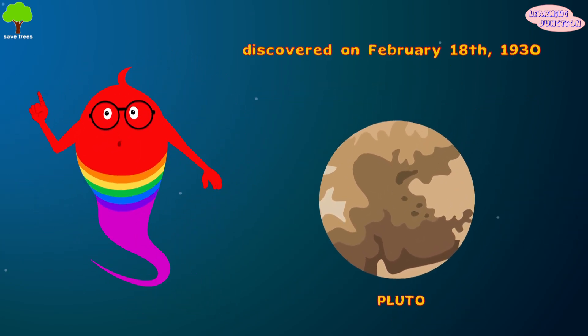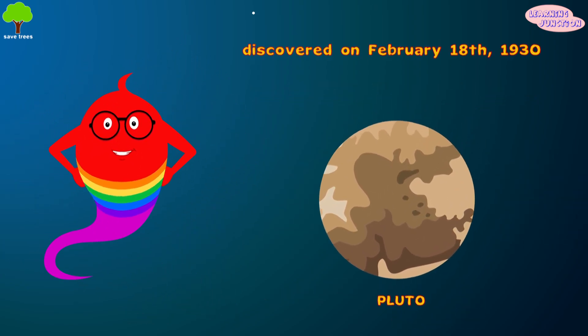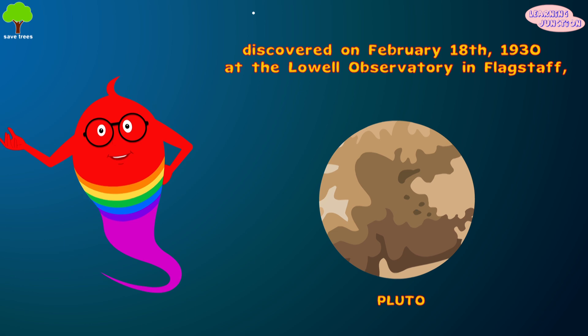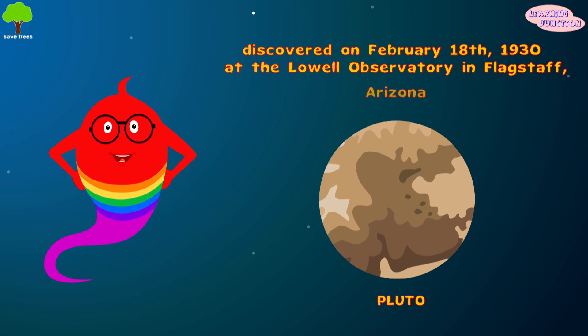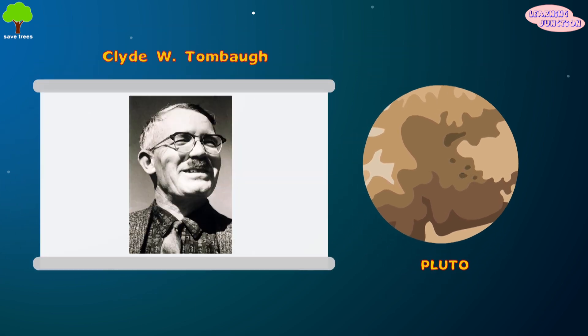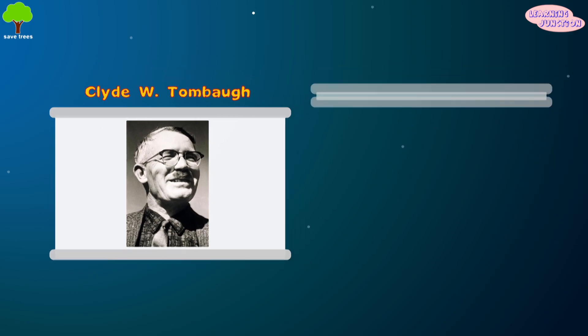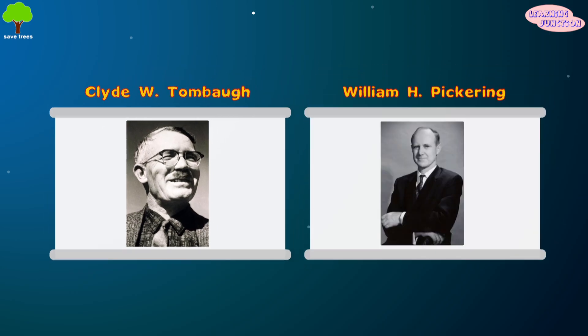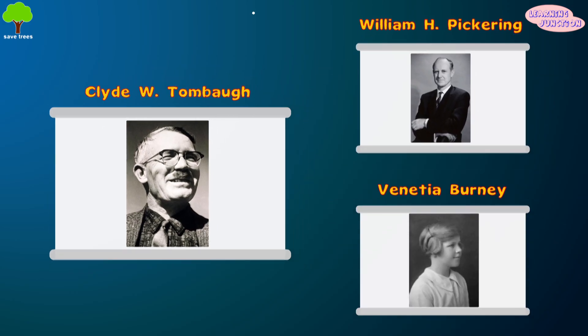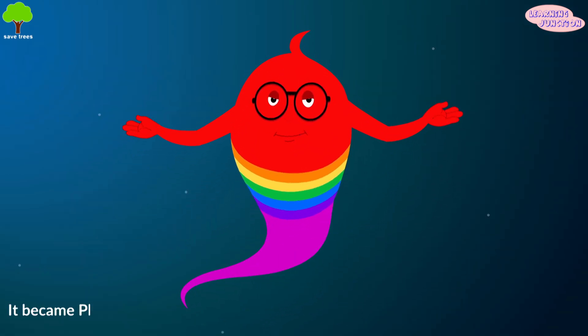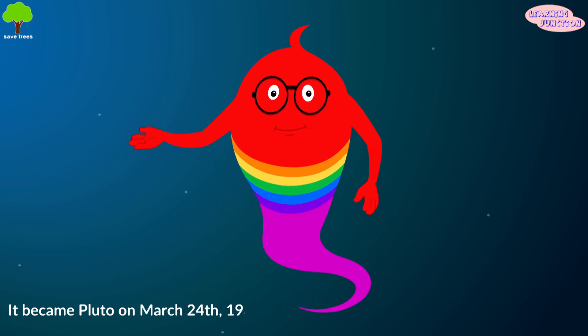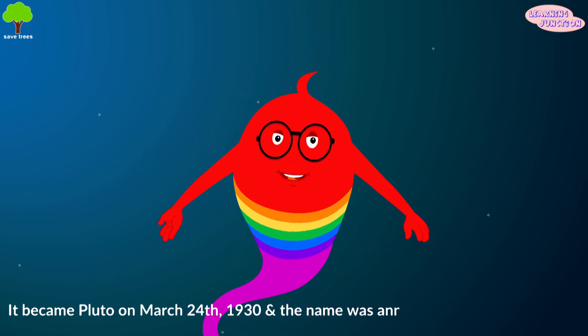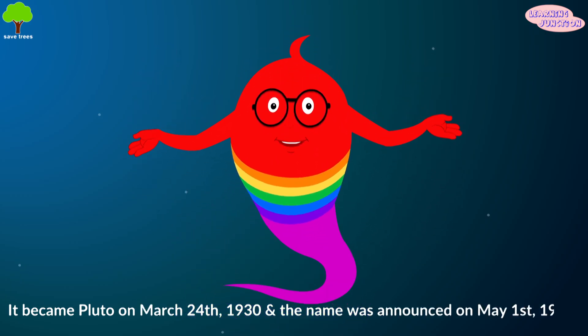Pluto was discovered on February 18, 1930, at the Lowell Observatory in Flagstaff, Arizona, by astronomer Clyde W. Tombaugh, with contributions from William H. Pickering. Venetia Burney of England, just 11 years old at the time, suggested the name Pluto. It officially became Pluto on March 24, 1930, and the name was announced on May 1, 1930.